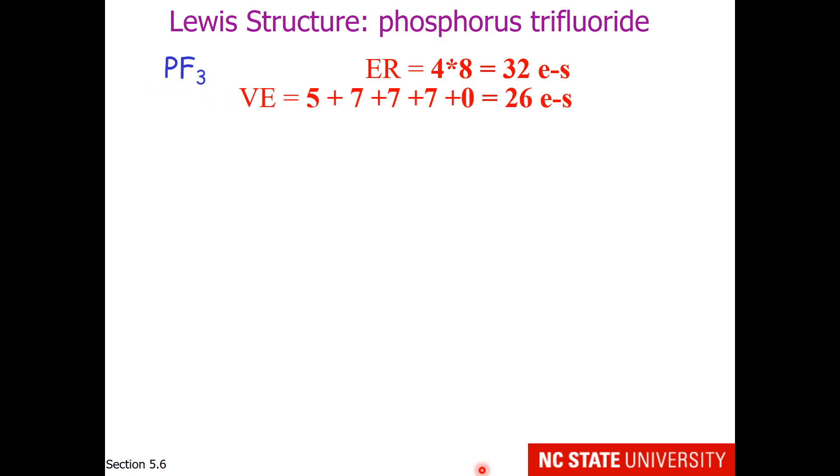Valence electrons would be 5 from phosphorus and 7 from each fluoride. This adds up to 26 electrons. The number of shared pairs, or bonds, if one takes 32 minus 26, you get 6.